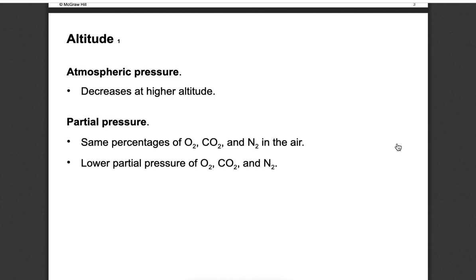When you go up in altitude, the baseline we refer to is sea level. As you get higher and higher, things start to change to a greater extent. Atmospheric pressure is the greatest thing affected at altitude - as you go up, you decrease atmospheric pressure, with less pressure pushing air particles together. This changes partial pressures, which are related to overall atmospheric pressure. If total atmospheric pressure goes down, so do the partial pressures, which drive oxygen into our blood and CO2 out.